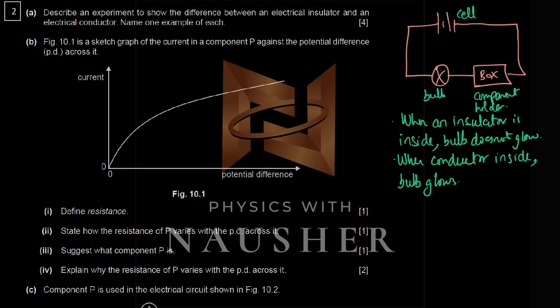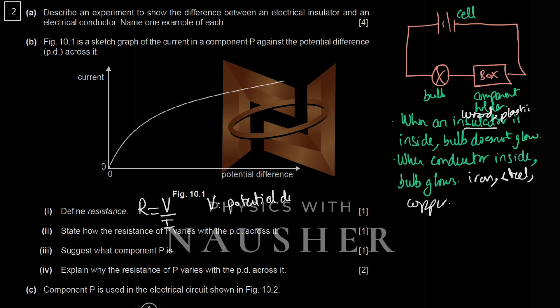Give one example of each: insulators include wood and plastic; conductors include iron, steel, or copper — all allow current to pass. To find resistance, resistance equals voltage divided by current (R = V/I), where V stands for potential difference and I stands for current.